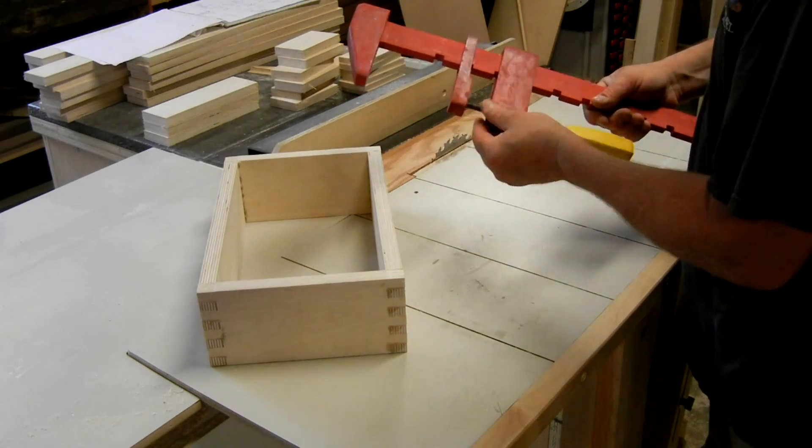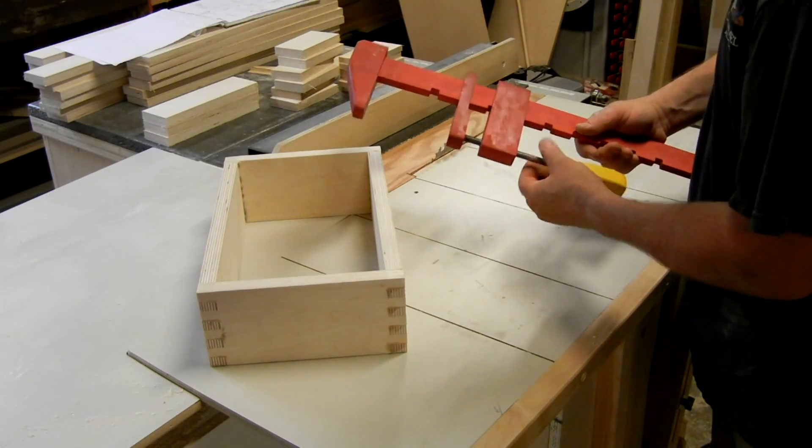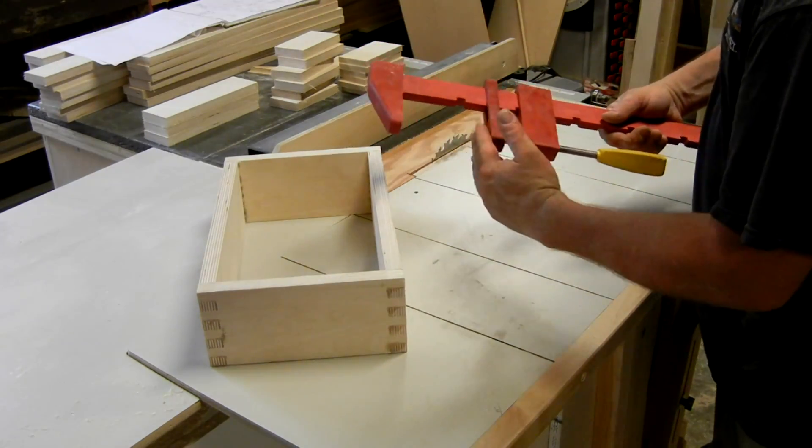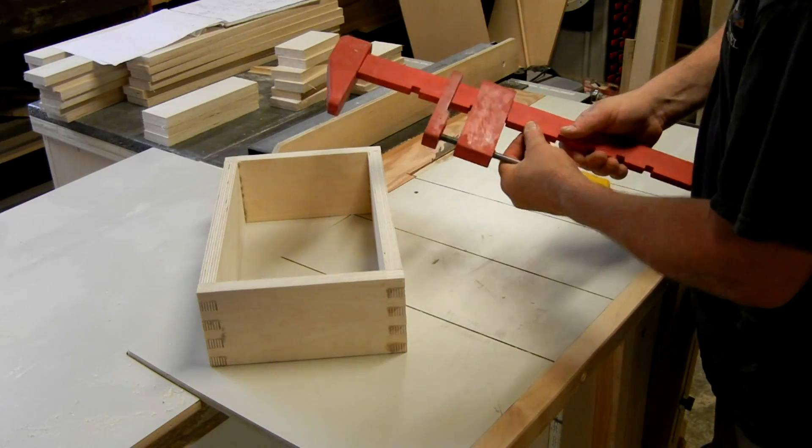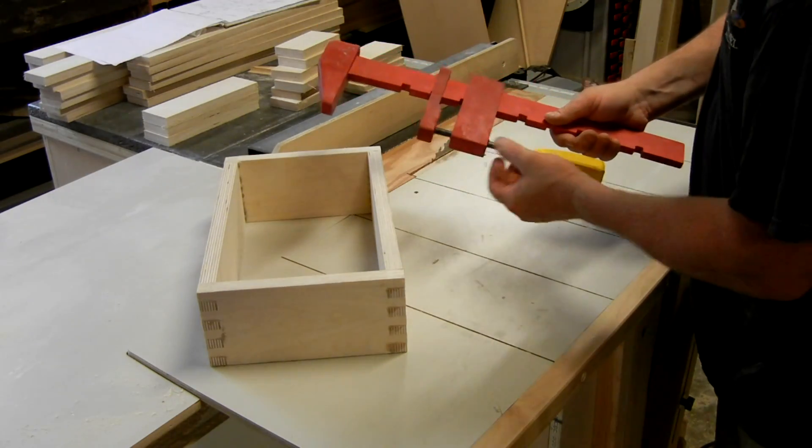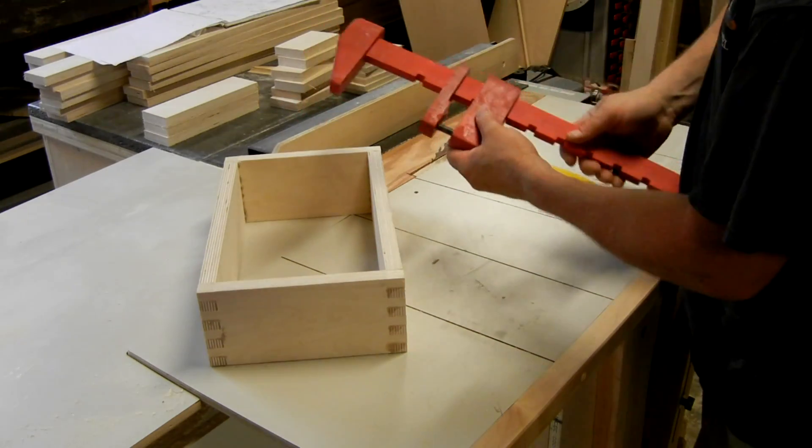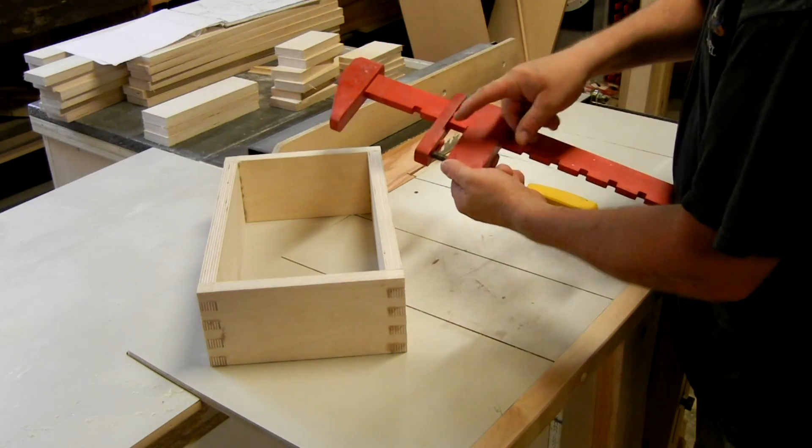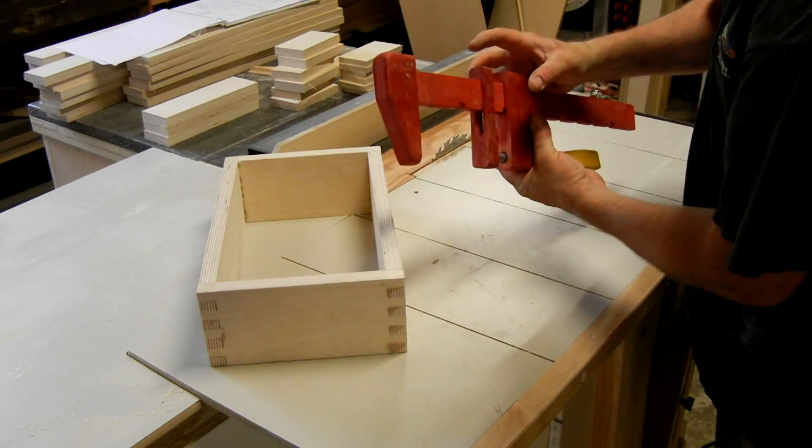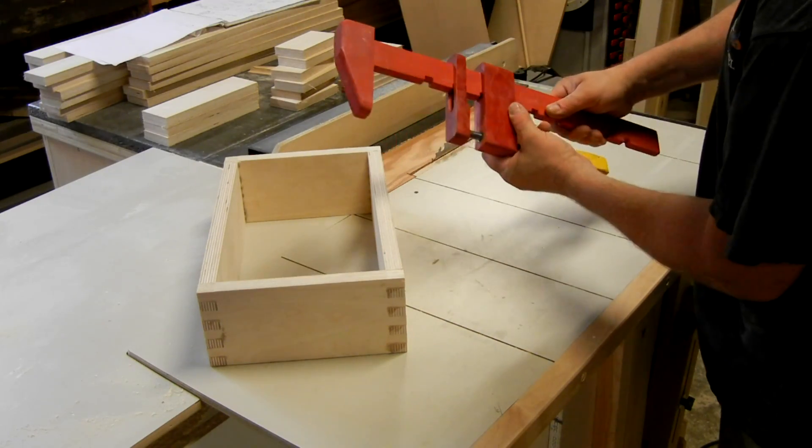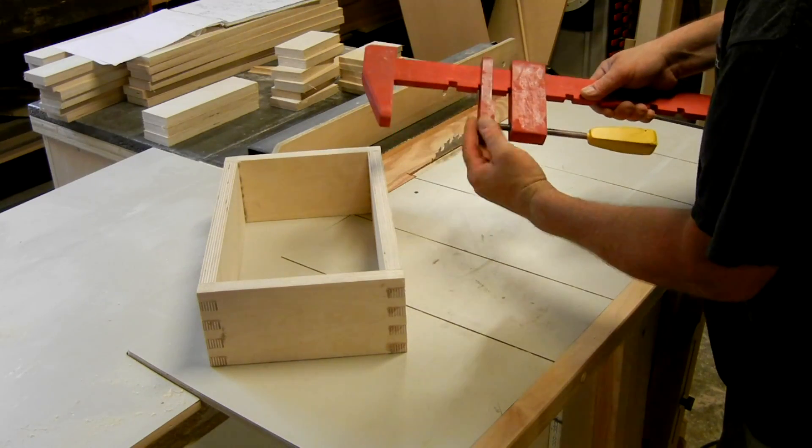One of the good features of this clamp is that it will put even straight pressure on the work. As the threaded rod pushes forward, there's a tendency to bend this bar back and to bend the screw block back. But this part stops it from going too far. So you always got good flat pressure between the jaws.